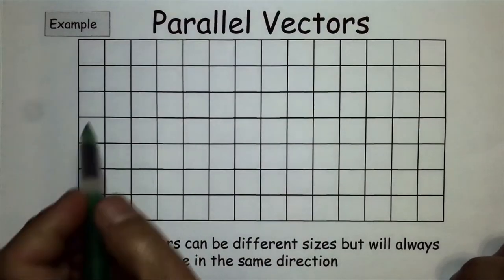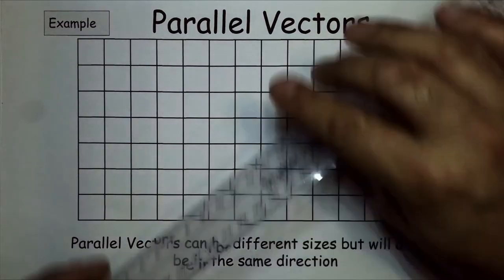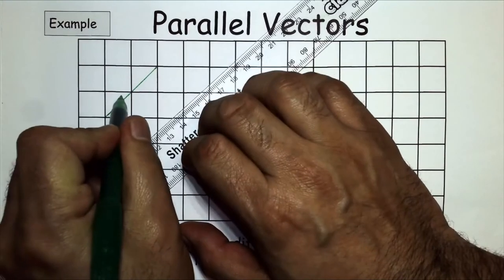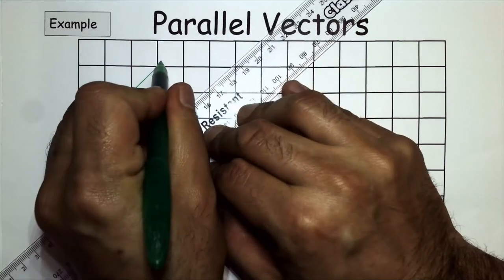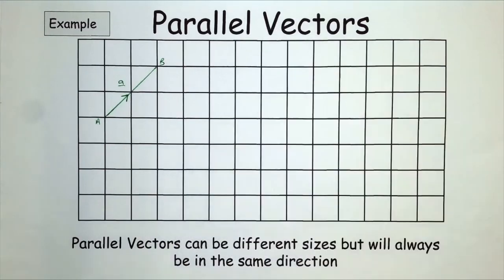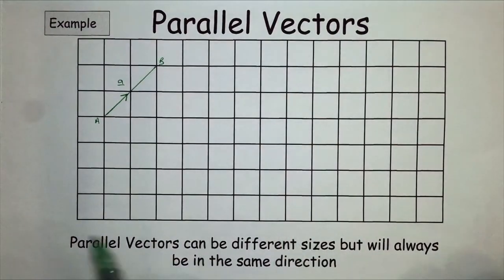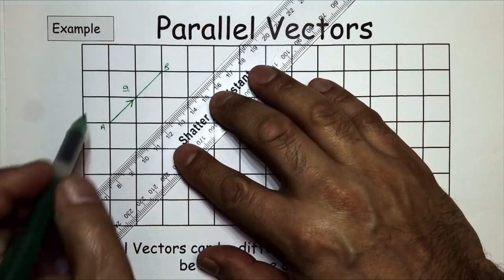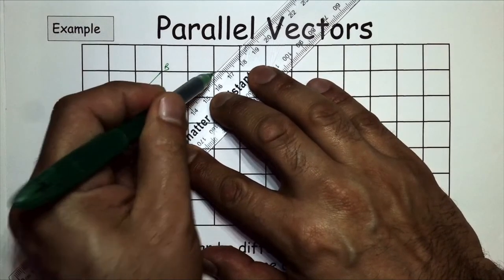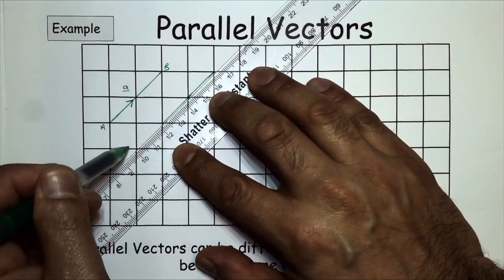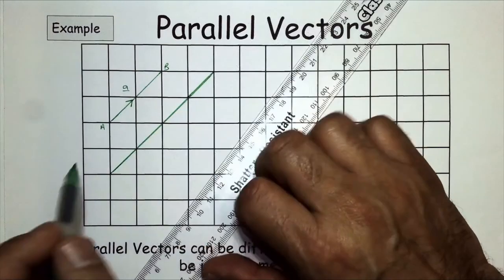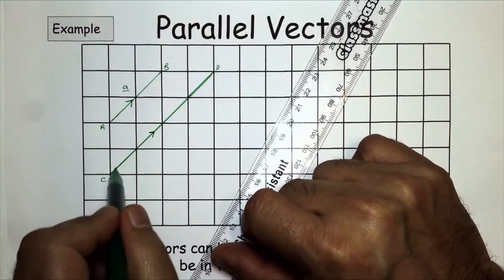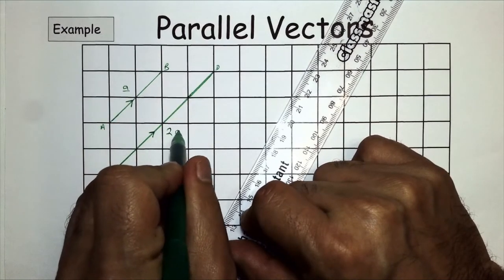For parallel vectors: here's a vector going in a direction between two points - call that point A, point B, and call that vector a. A parallel vector has to go in the same direction. So I'm going to draw a line going in the same direction but twice as big, calling the endpoints C and D. Because it's twice as big as a in the same direction, this is now called vector 2a.